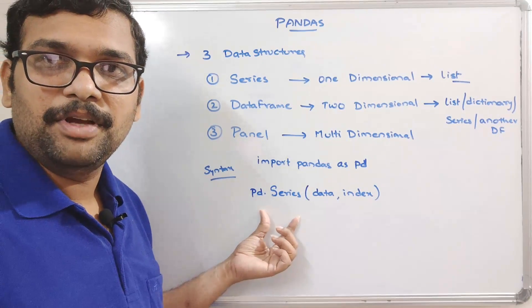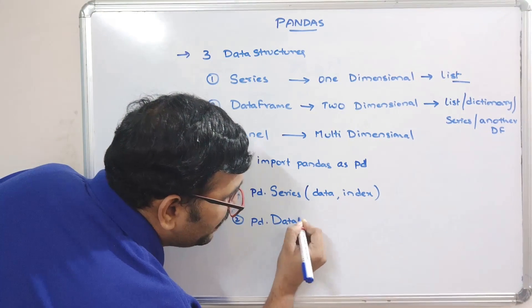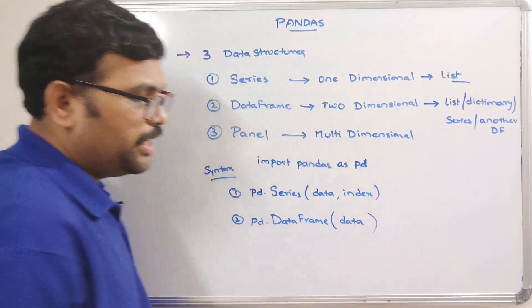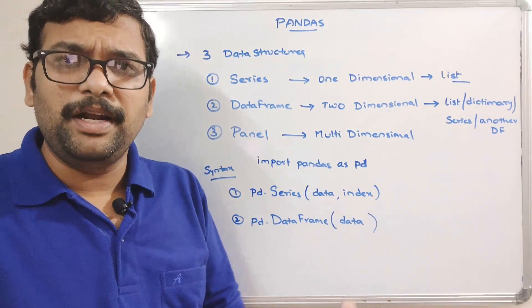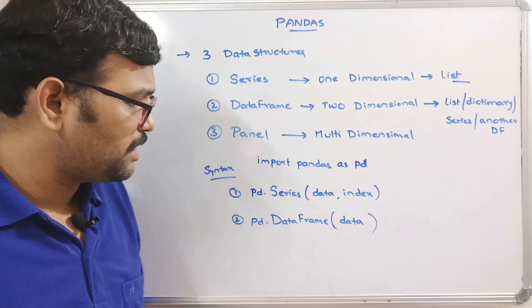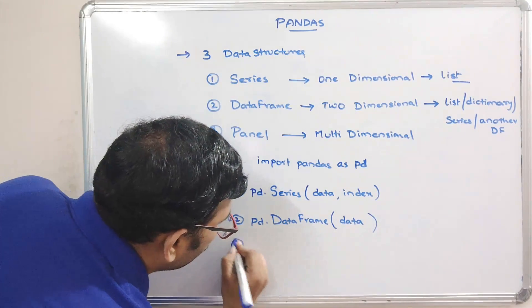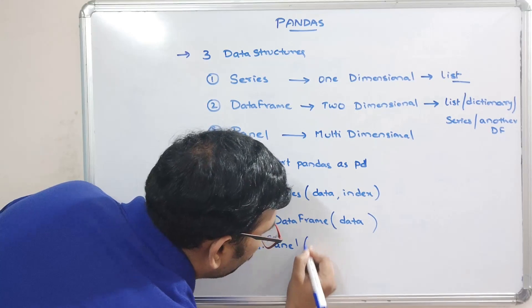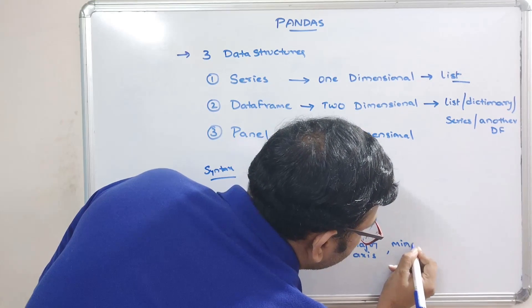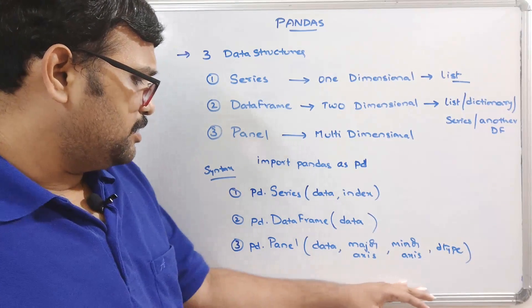For the DataFrame, the syntax is pd.DataFrame(data), with D and F capitalized and no space. The data can be a list, dictionary, Series, or another DataFrame, and you may optionally specify an index. For the Panel, the syntax is pd.Panel(data), with P capitalized, along with major axis, minor axis, dtype, and copy parameters.